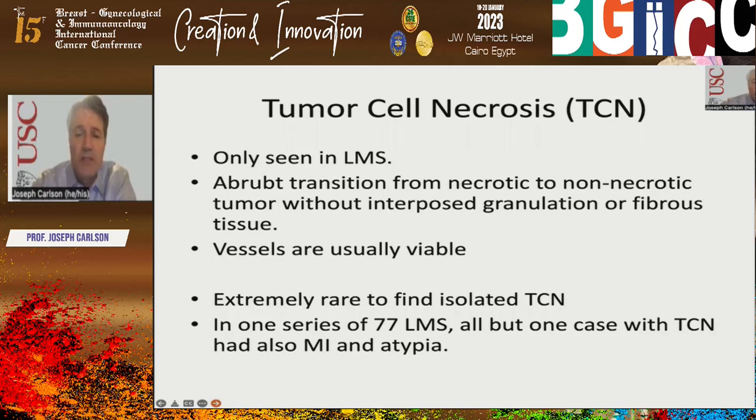Tumor cell necrosis is only seen in leiomyosarcoma. It's an abrupt transition from necrotic to non-necrotic tumor areas without any interposed granulation or fibrous tissue; the vessels are usually viable. It's very rare to find tumor cell necrosis as the only finding. In one series of 77 leiomyosarcomas, all but one case with tumor cell necrosis also had a high mitotic index and atypia.